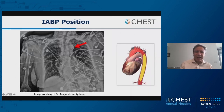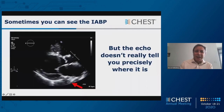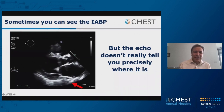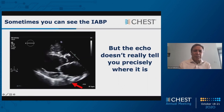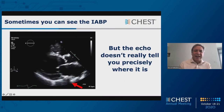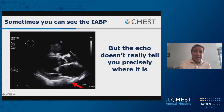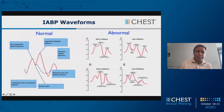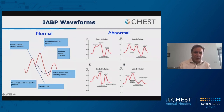I'd like to thank my colleague Dr. Kennesberg for providing these slides as well as this echocardiographic picture. You actually can see the balloon in the descending aorta — here's what it looks like. You see the left ventricle, the left atrium, the aortic valve, the aorta, and the right ventricle up on top. That round structure behind the atrium is the descending aorta. The red arrow shows this echo-dense structure popping around in there. So the echocardiogram will tell you that something's in the descending aorta — that's the balloon pump — but the echo doesn't really tell you exactly where it is.